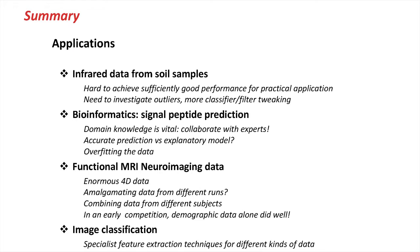The applications we've looked at have been particularly enlightening. The first one was Jeff Holmes, who talked about infrared data from soil samples. He explained that it was hard to achieve sufficiently good performance for practical application. In the activity, you didn't get there either — you need to do more work on those data sets: investigating dealing with outliers, improving data quality, and more tweaking of classifiers and filters in that huge space of experimentation.